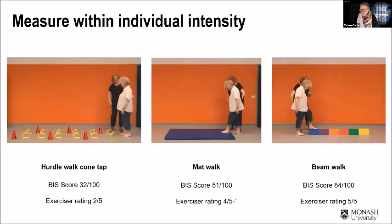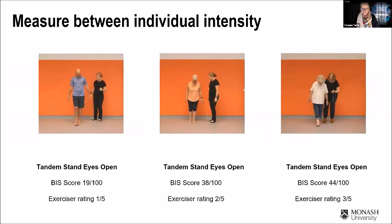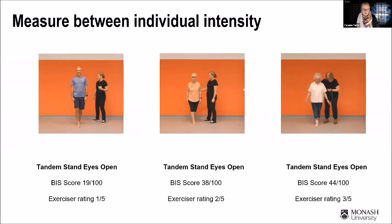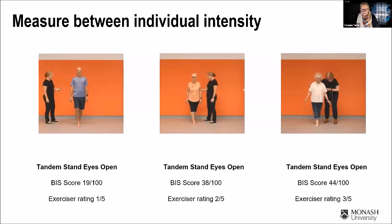Another application of the scale is to look at three individuals doing the same task and see how that task works for each of them. If you're conducting a group exercise program with everyone doing the same thing, you might see that for the person on the left it's quite easy, but for the person on the right it's getting to a moderate challenge level of 44 out of 100 — so you can monitor that way as well.